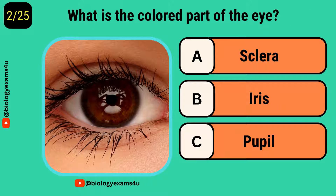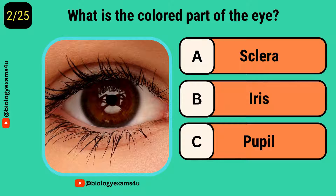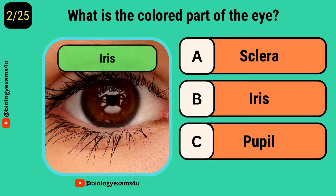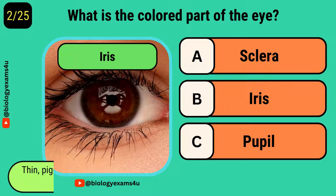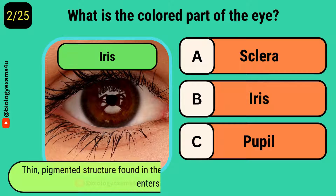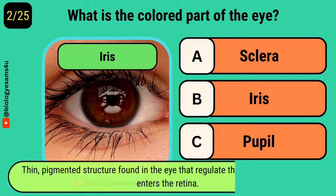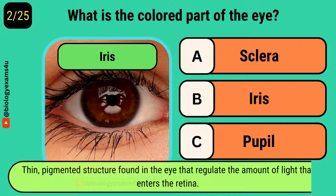What is the colored part of the eye? It is called the iris. It is a thin pigmented structure found in the eye that regulates the amount of light that enters the retina.